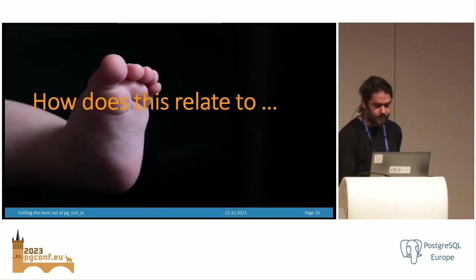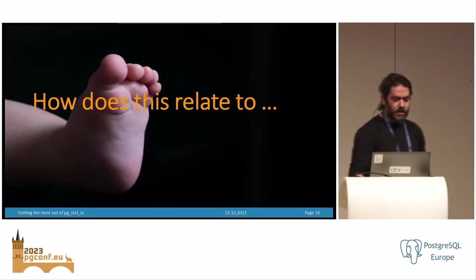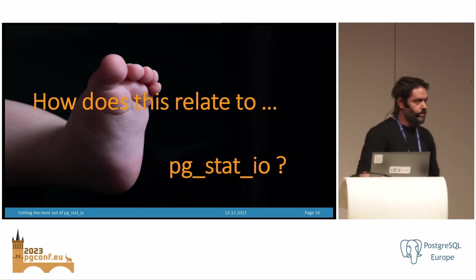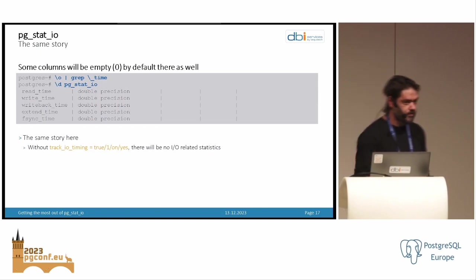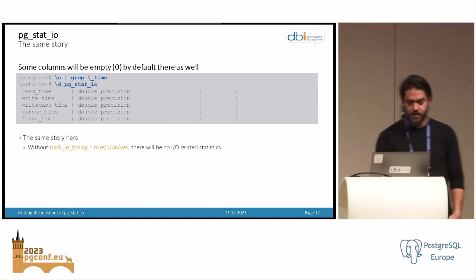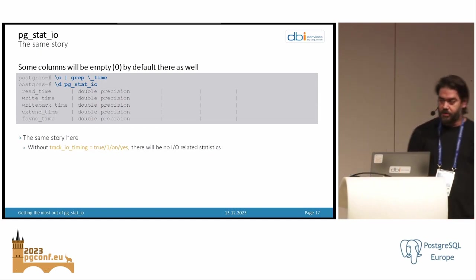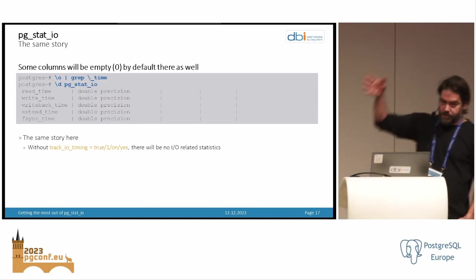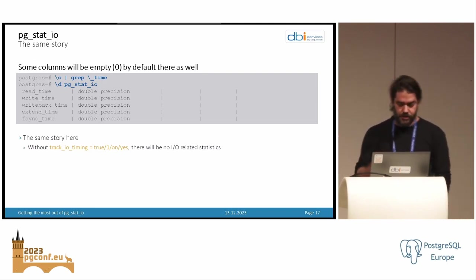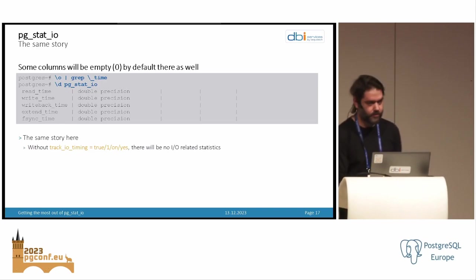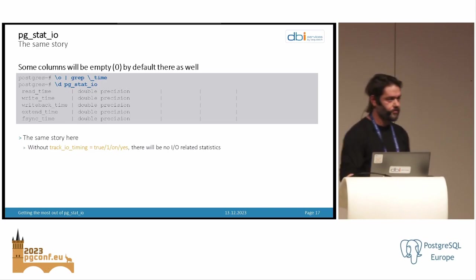Going further — how does this relate to pgstat.io? As I said previously, when you look at pgstat.io, you will see the exact same situation as in pg_stat_statements. By default, all those metrics will be zero. So nothing you can get out of this if you don't turn track_io_timing to on.